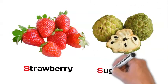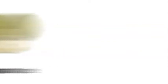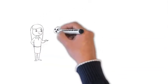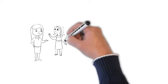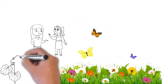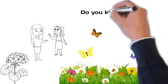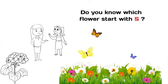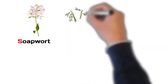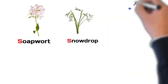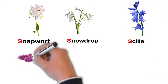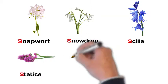After that, Jibu decided to go for playing in the garden for some time. And then Sara and Jibu saw there some beautiful flowers. So they decided to find out flowers which start with S. Kids, do you know which flower starts with S? It's soapwort, snowdrop, scilla, statice, and showy stone crop.